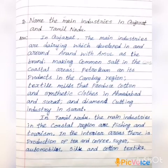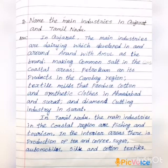Question number 2: Name the main industries in Gujarat and Tamil Nadu. Answer: In Gujarat, the main industries are dairying, which developed in and around Anand with Amul as the brand; making common salt in the coastal areas; petroleum and its products in the Khambhat region; textile mills that produce cotton and synthetic cloth in Ahmedabad and Surat, and diamond cutting industry in Surat.